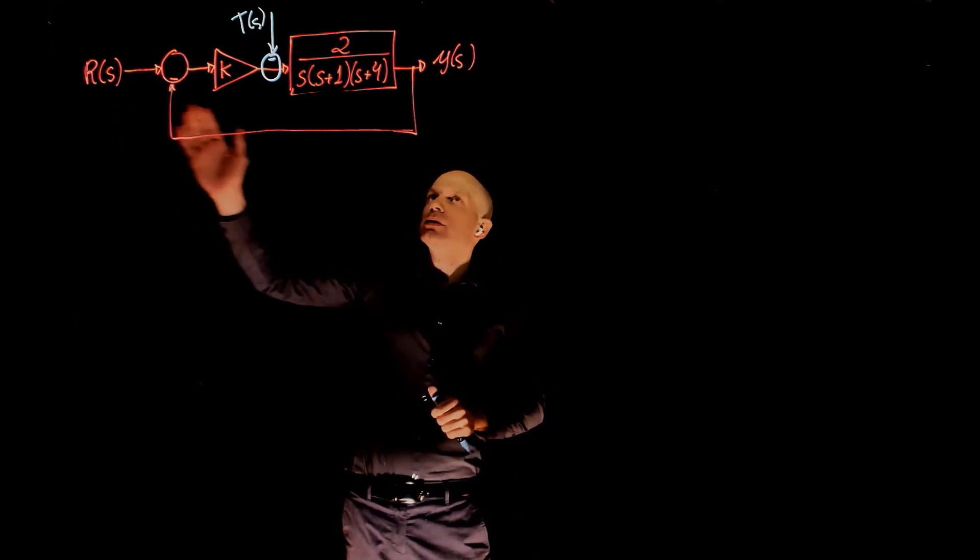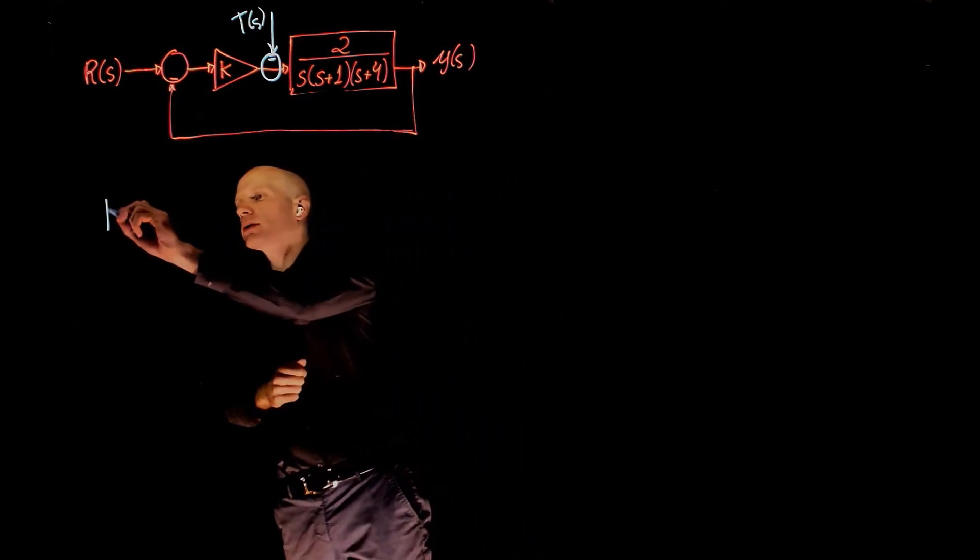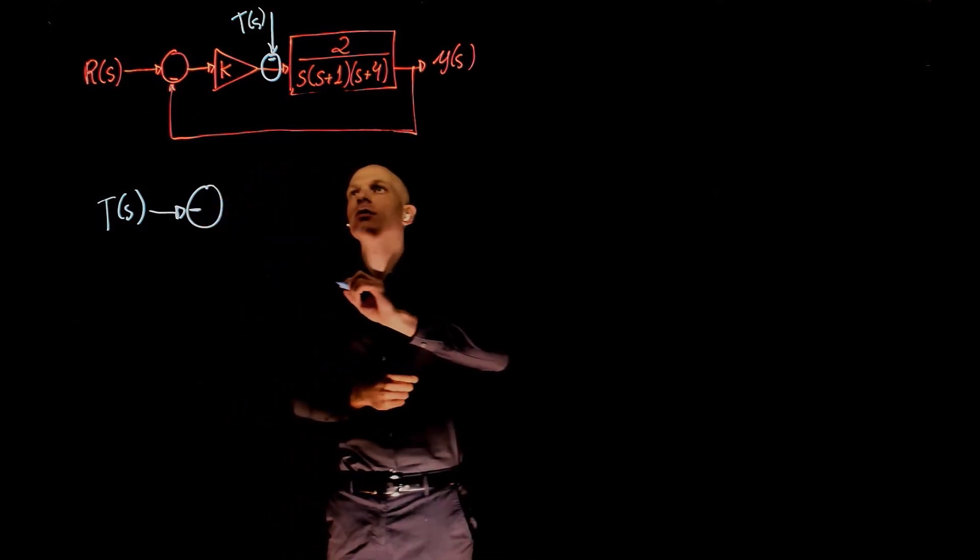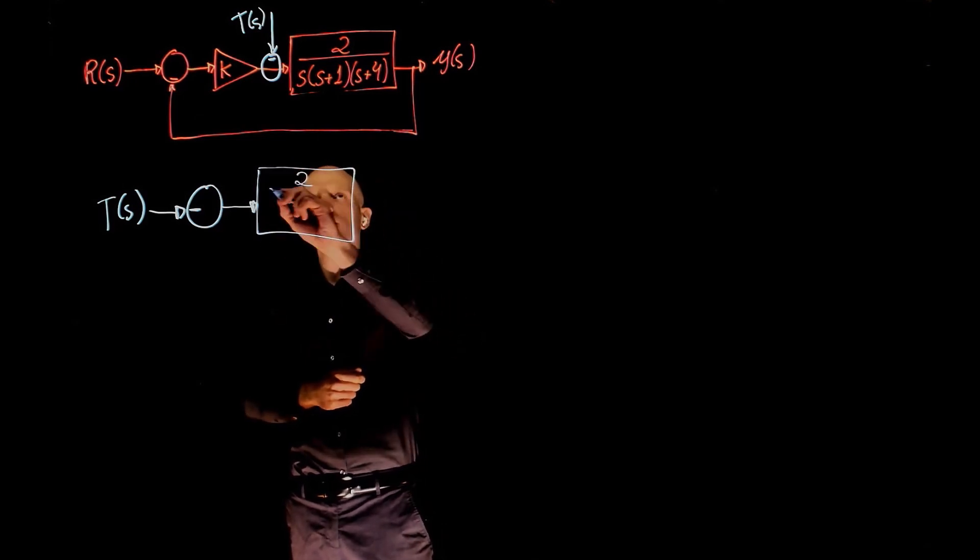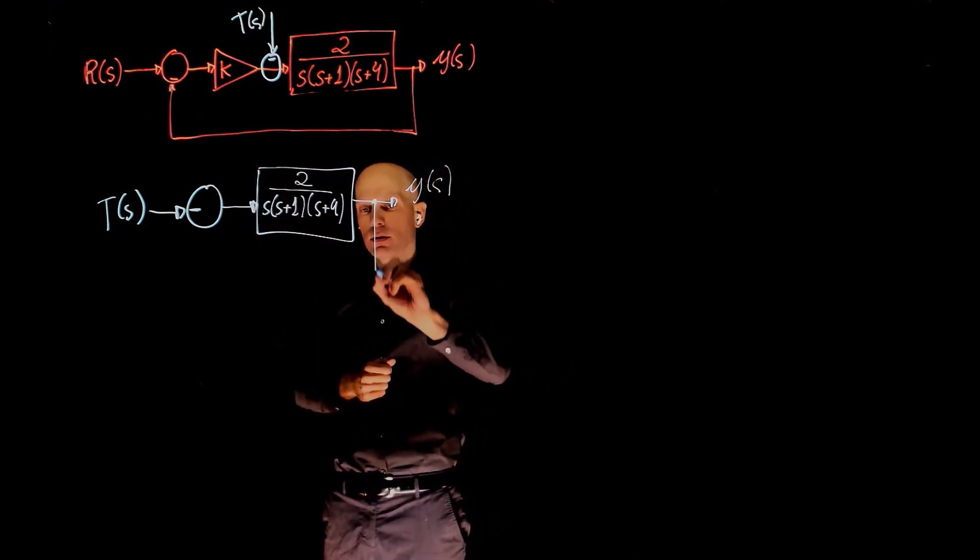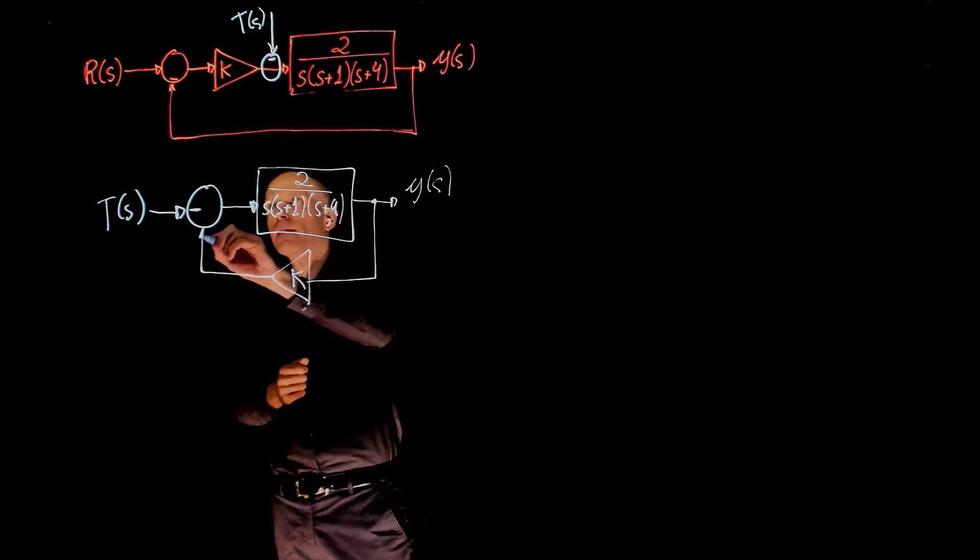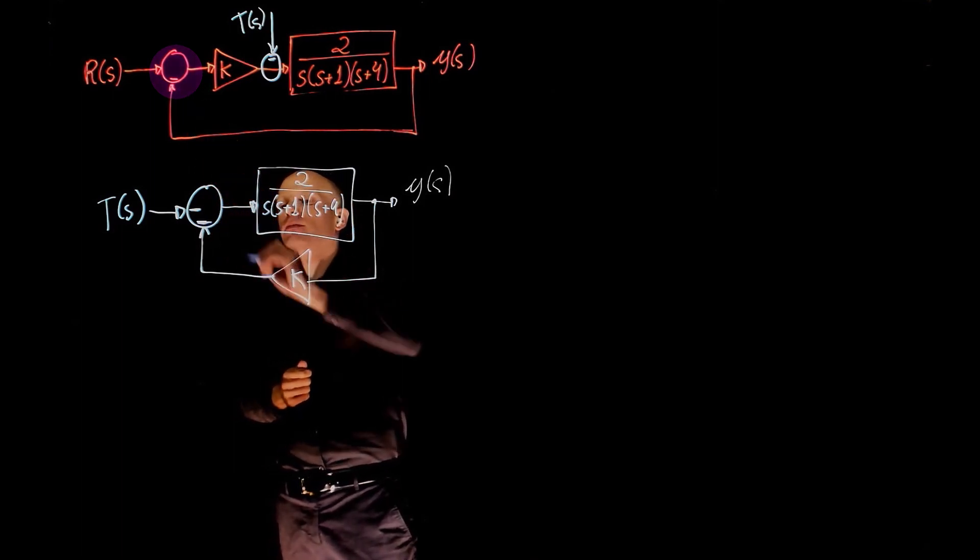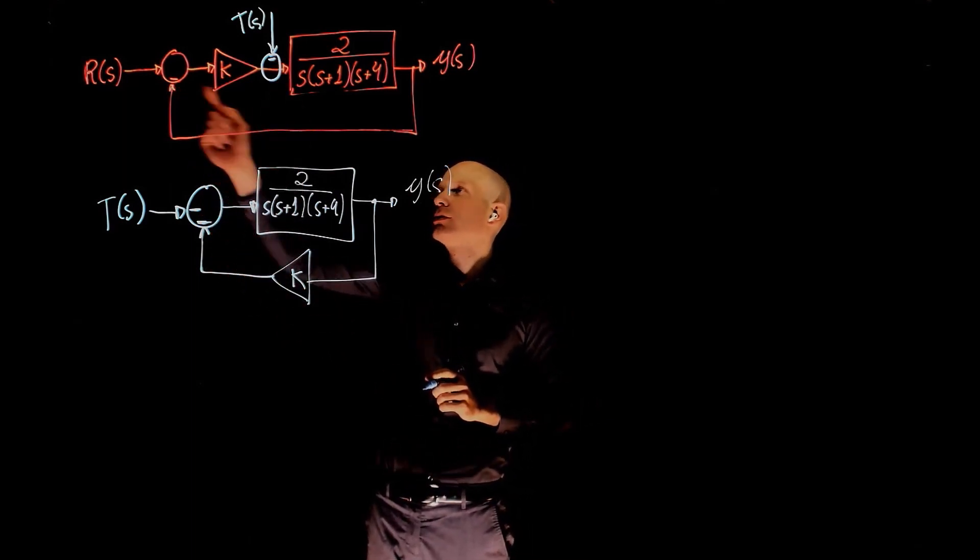Now let's set R to 0 and find the transfer function between Y and T. We can rearrange this block diagram and start now with T(s). T(s) goes to a sum, there is a negative sign here. We have the mainline function, the output Y(s). And now K becomes the feedback function, K, that feeds a sum with a negative sign. Again, that negative sign there. This negative sign corresponds to this one and this negative sign corresponds to that one.